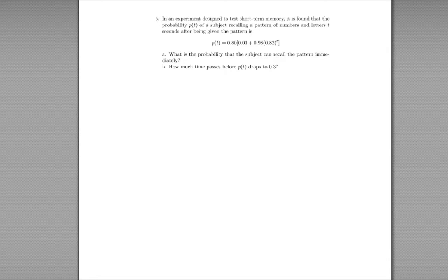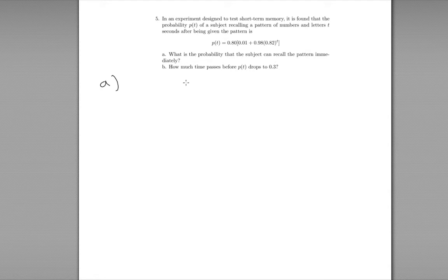What's the probability they can recall it immediately? And the second question is: how much time passes before the probability drops to 0.3? So how long will it take before the probability of recall goes to 0.3? For the first question, since t represents how long after the pattern was shown, immediately means 0 time has passed, so t equals 0.